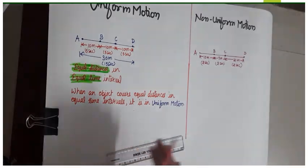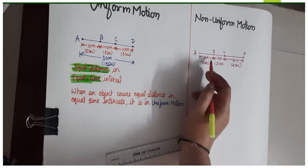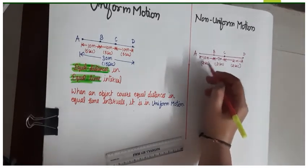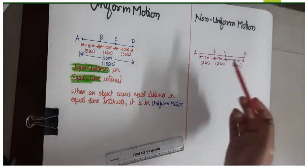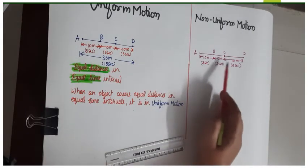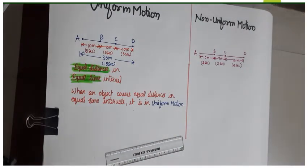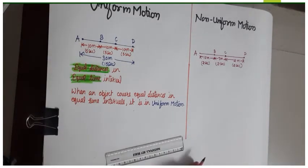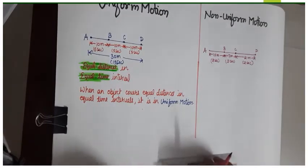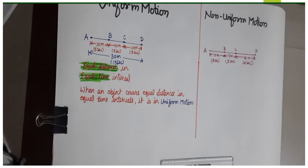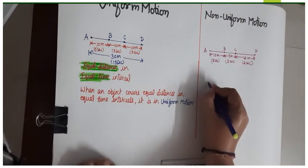We see that here the object is covering unequal distances in equal time intervals. Equal time intervals of 2 seconds are there, but the object is covering unequal distances. Such a situation or type of motion where an object covers unequal distances in equal time intervals, the object is said to be in non-uniform motion.